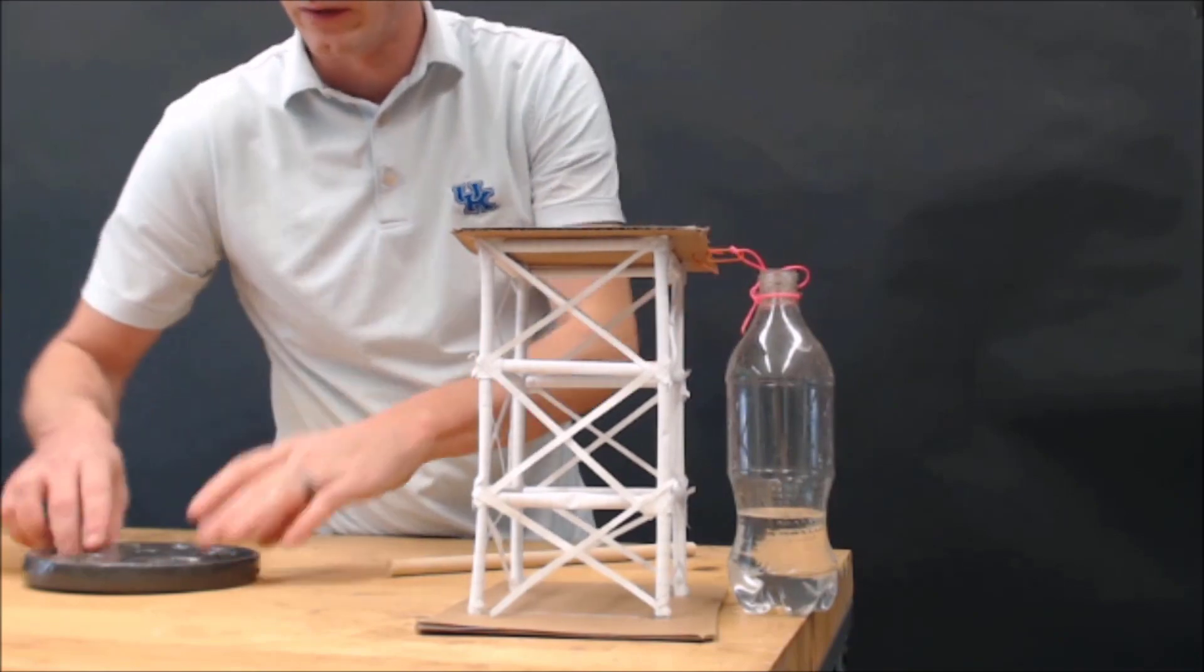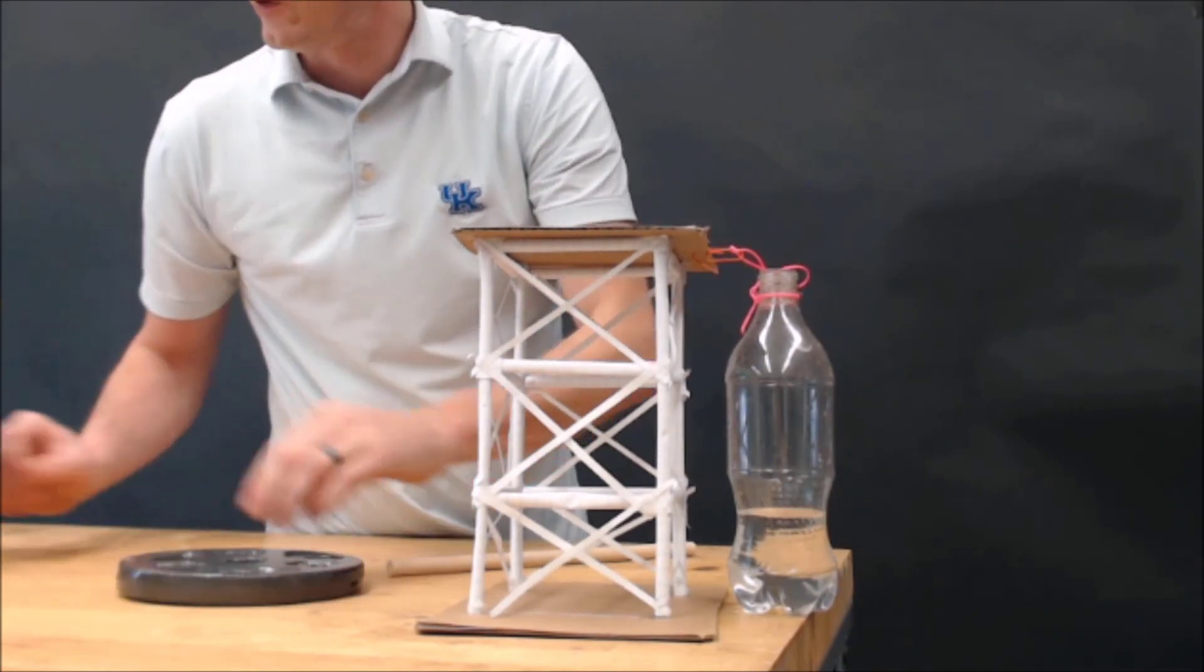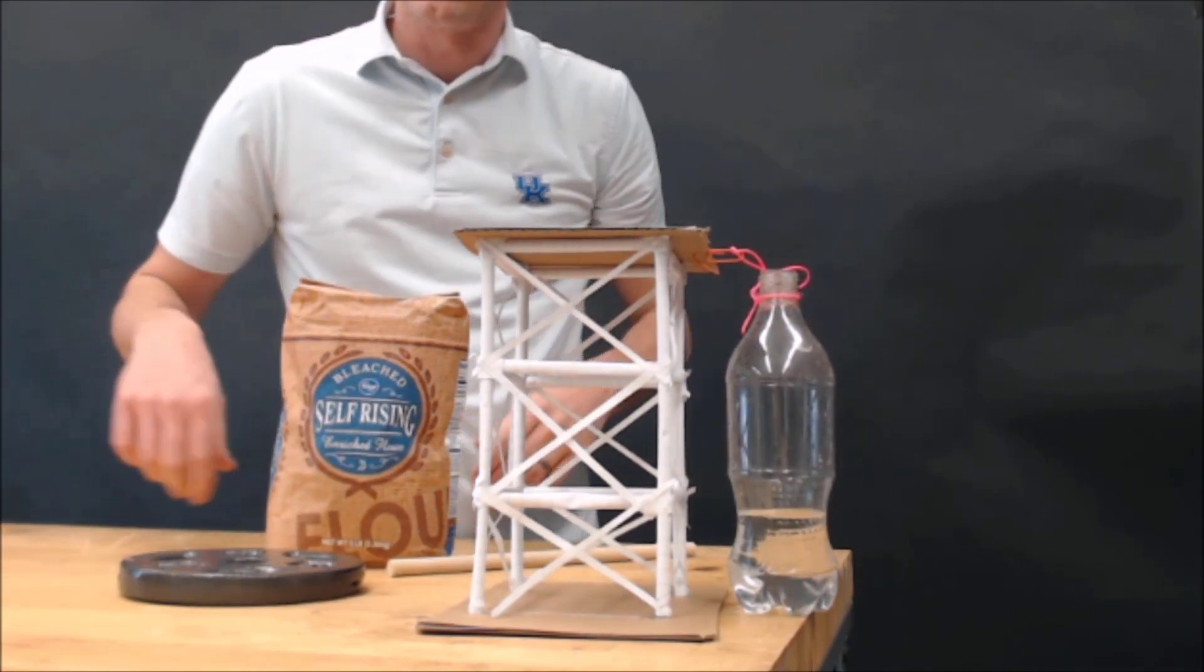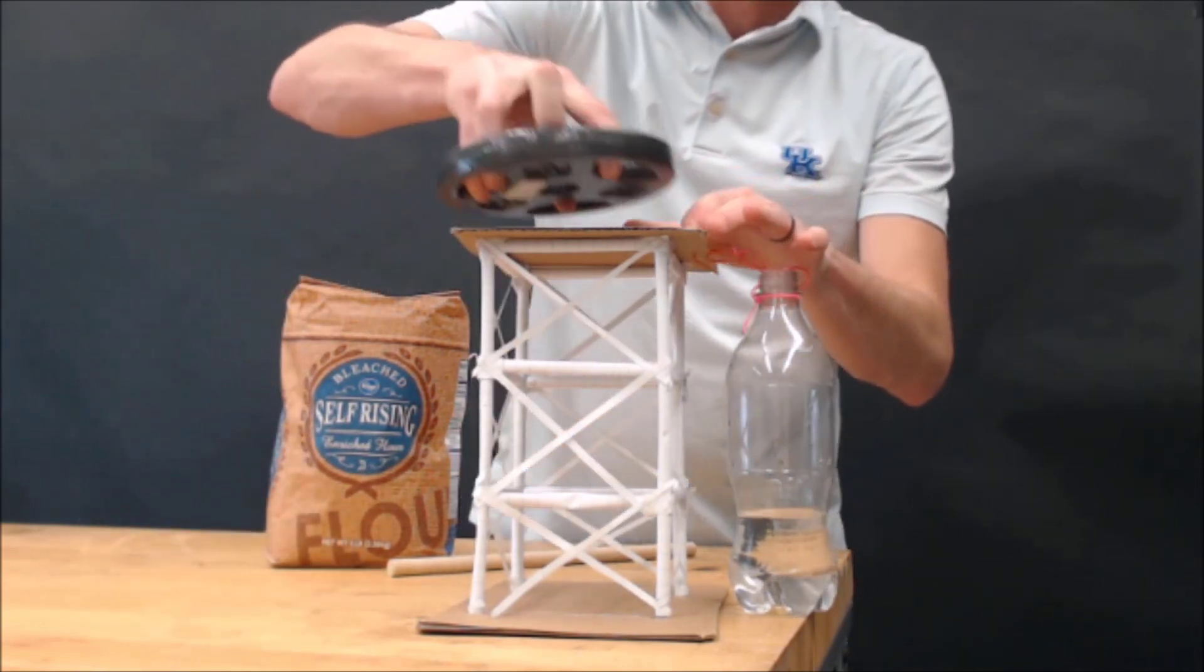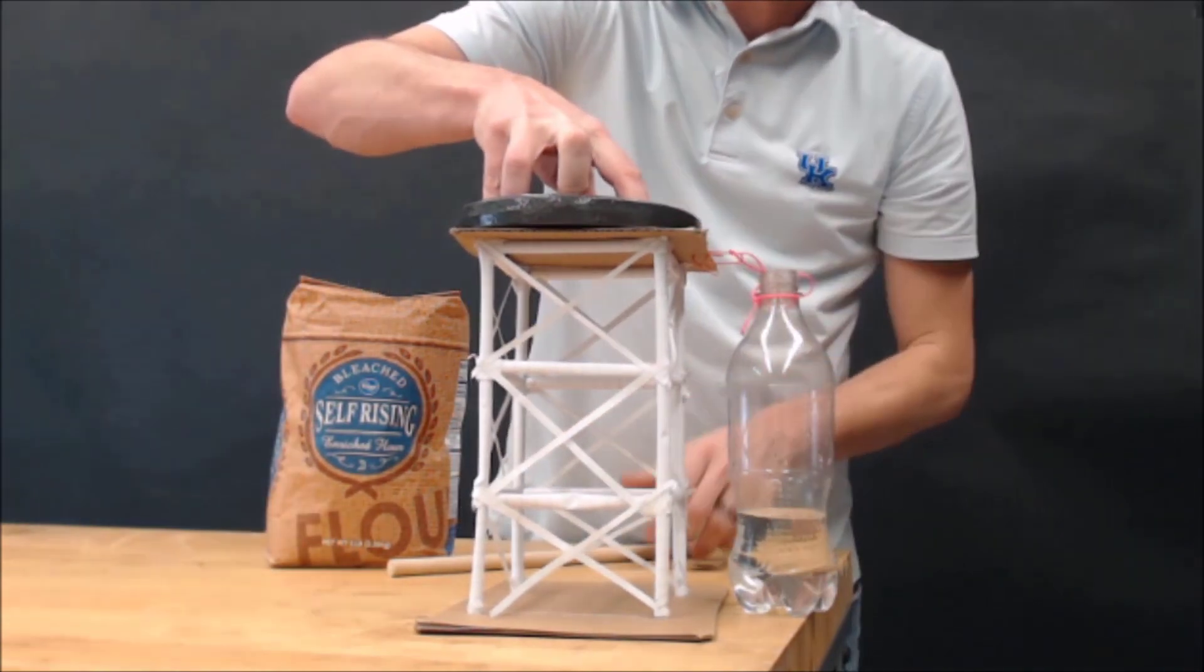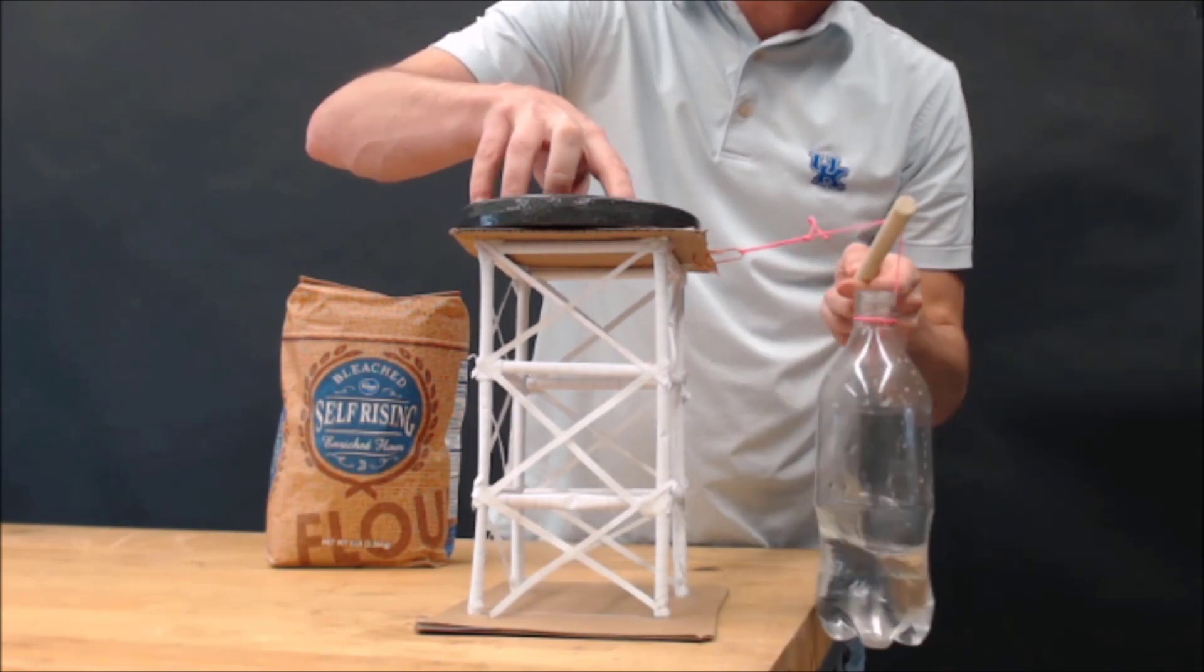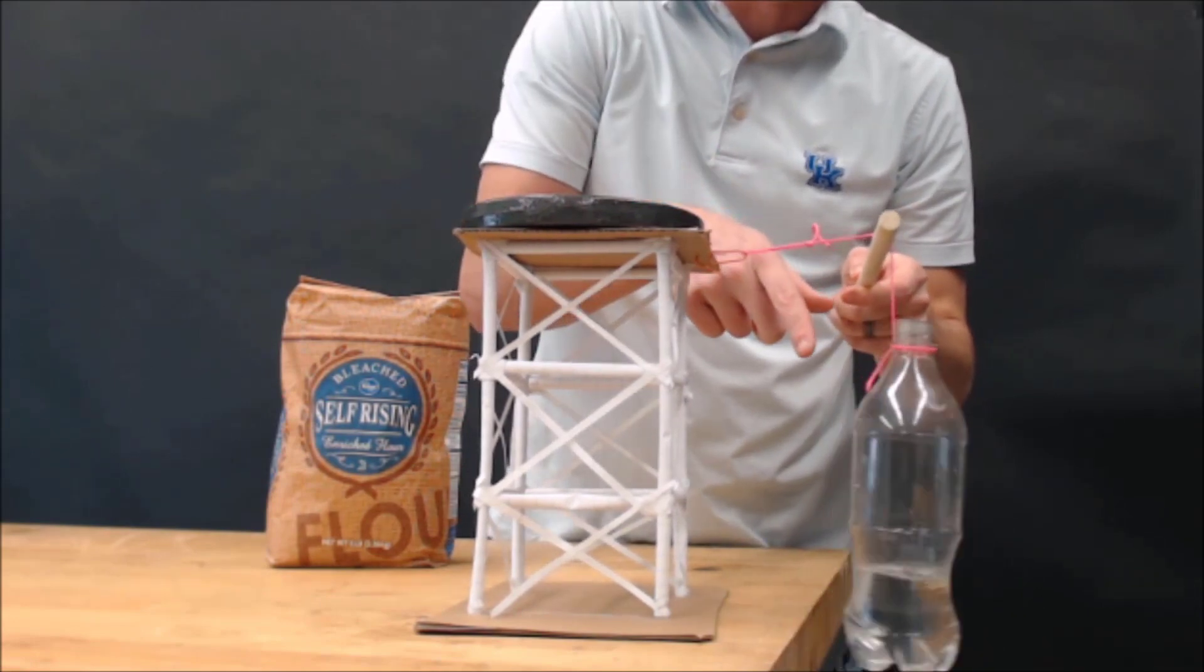So the tower we're going to design needs to hold five pounds. If you don't have access to the weight, you can always use a sack of flour. We're going to add the weight up on top, and then apply a horizontal load by using a certain mass inside a container.